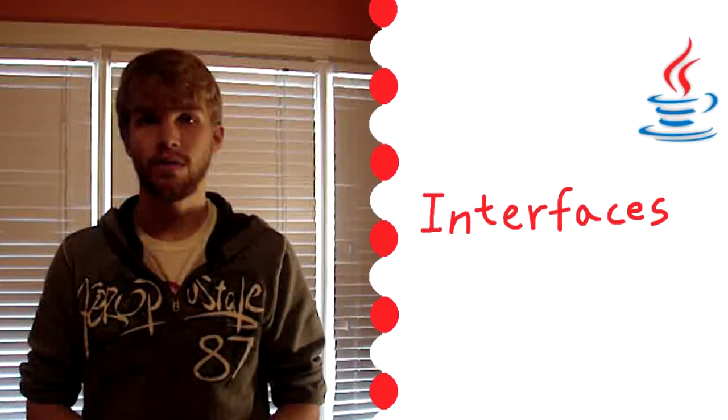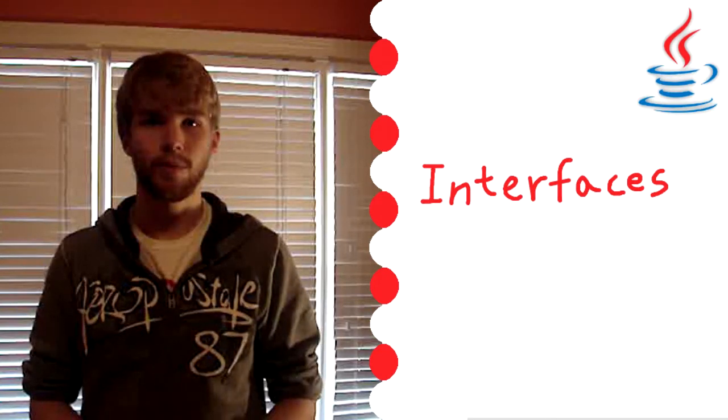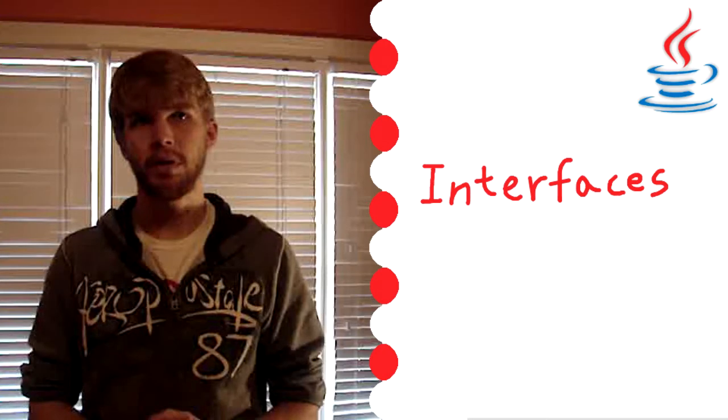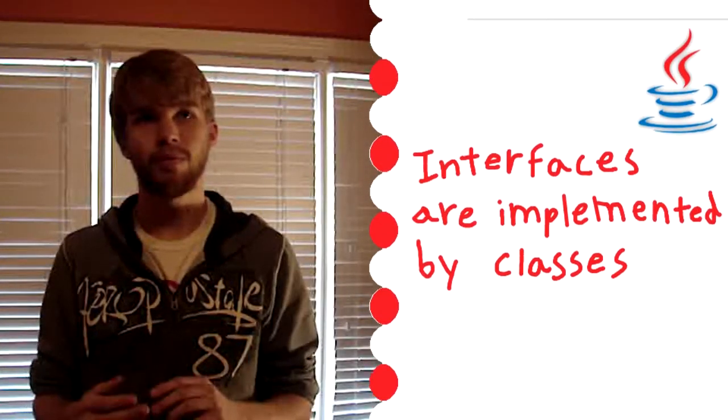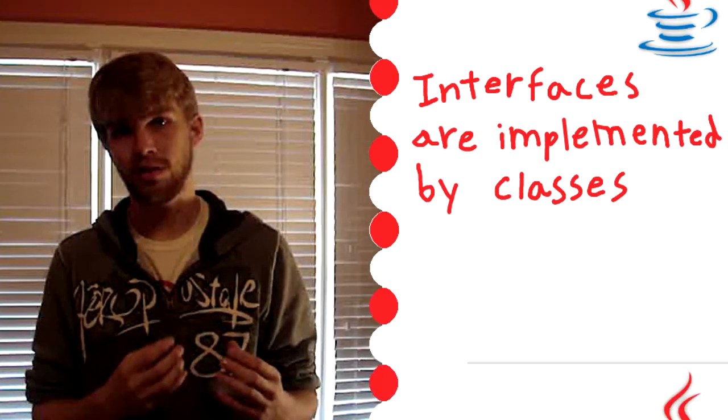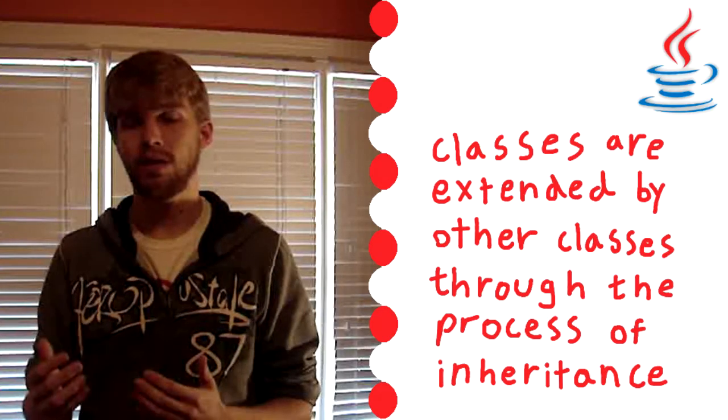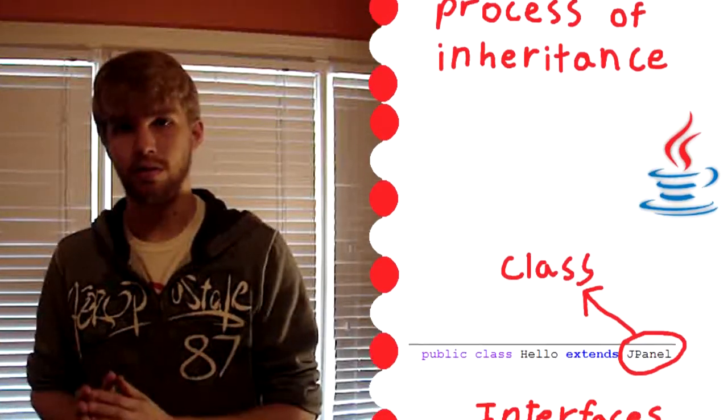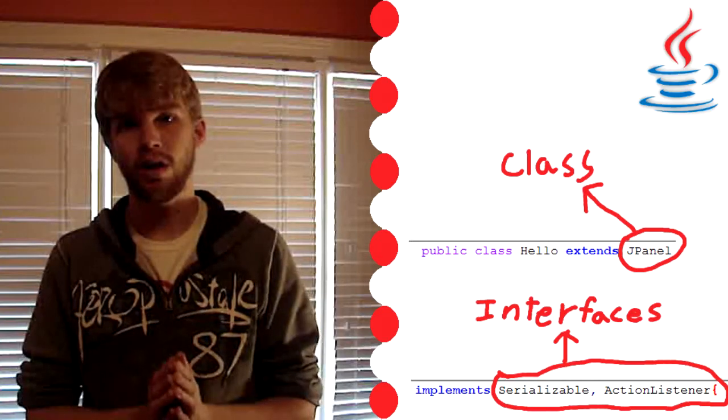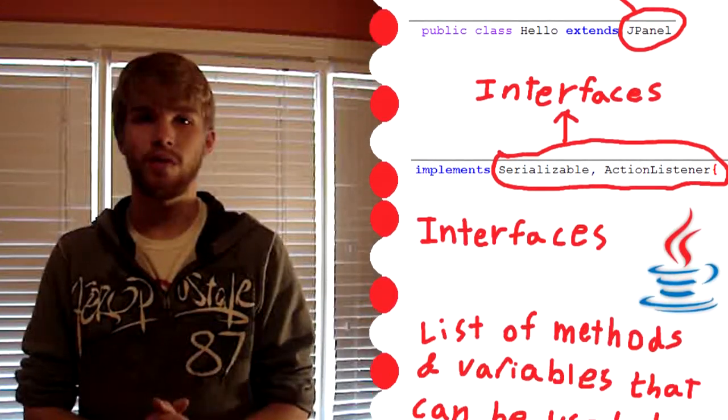But at the same time, they have interfaces. And interfaces sort of solve the problem of multiple inheritance. What interfaces are, they're similar to parent classes, but they basically have a list of things that implement it are required to have in programming speak. If a class inherits something, that's called extending. The class extends to the other class. And if it's taking from an interface, it's implementing the interface. So just know that. Extending a class, implementing an interface. Gotta know that vocab.